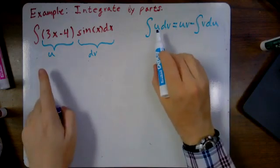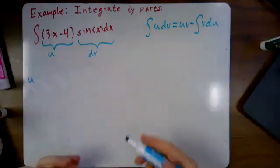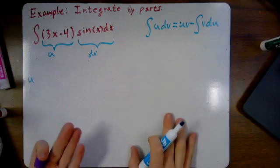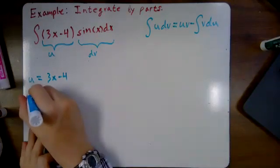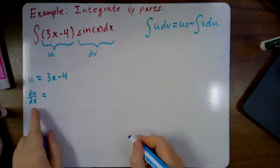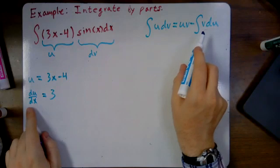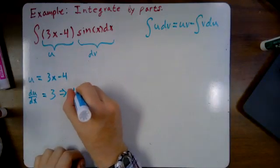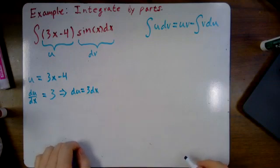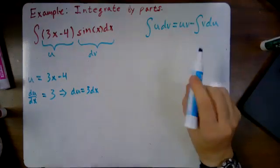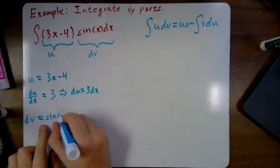In order to use this formula, I know what u and dv are, but I need to find v and du. We know that u is 3x minus 4, so we take the derivative to find du/dx, which equals 3. The formula wants du specifically, so multiply both sides by dx to get du equals 3·dx. This formula also needs v, but I don't know v yet — I know that dv equals sine of x·dx.